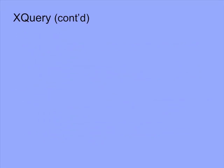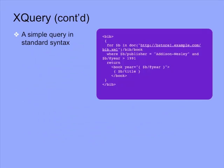Here is a basic example of XQuery — a simple query in standard syntax searching for information about a book, such as the author, title, and the year the book was published.